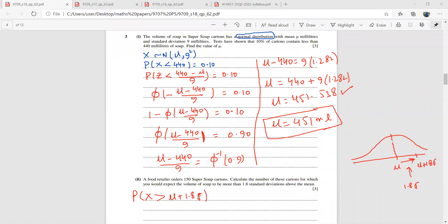I'll start by standardizing. Now I have the mu with me and I have this standard deviation. Let me find mu plus 1.8 standard deviations. Mu is 451.538 plus 1.8 times 9. That is 467.738. So we have to find the probability that X is more than 467.738.